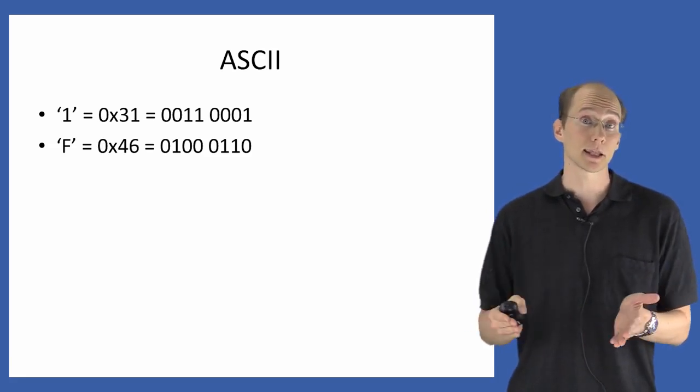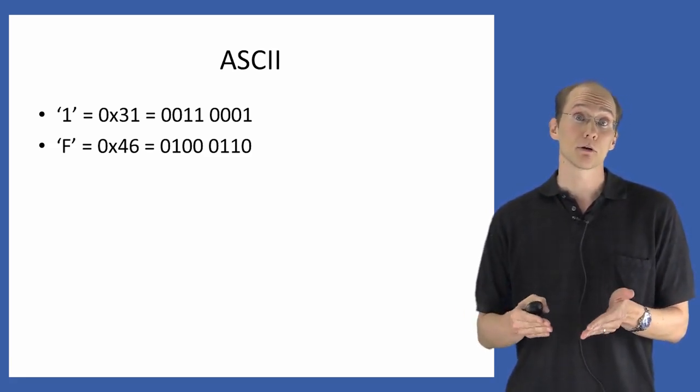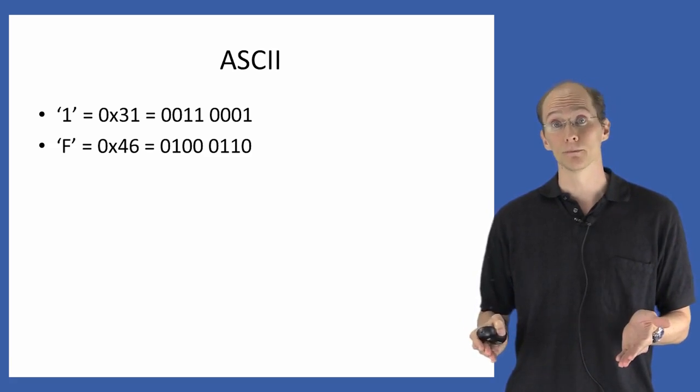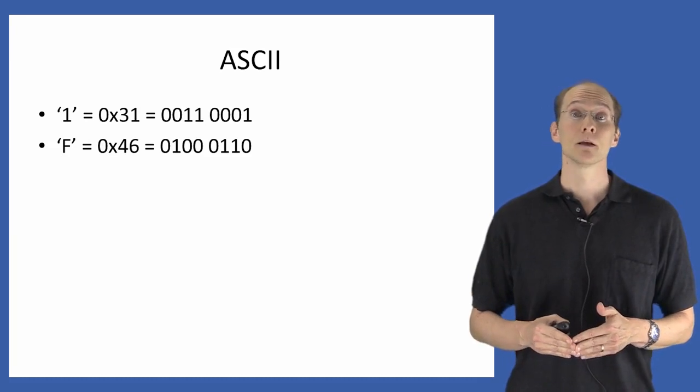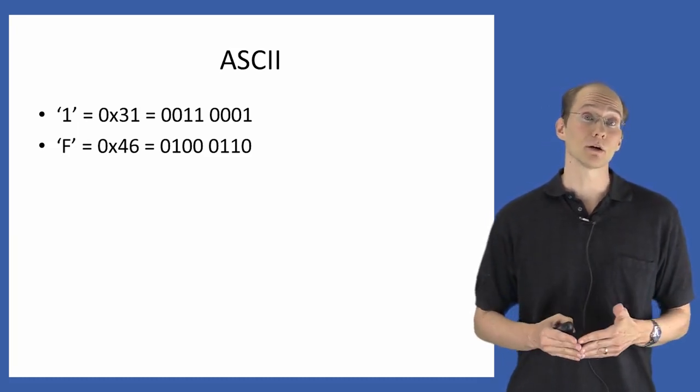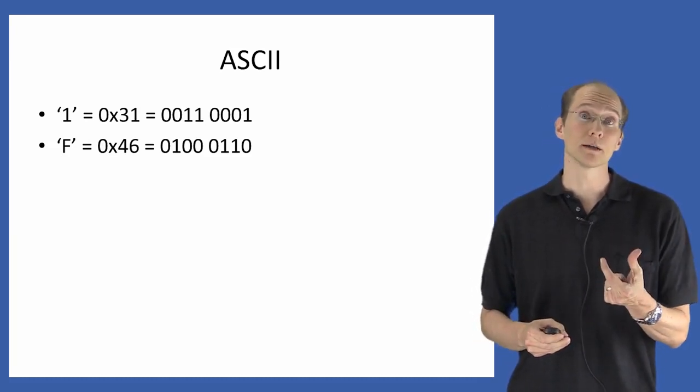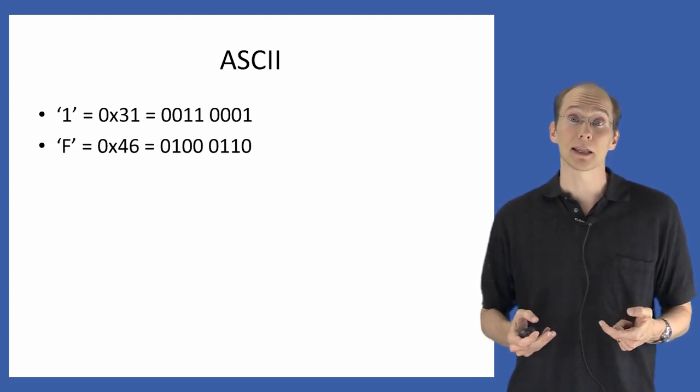that would actually be recorded in your computer as the hex value 31, or really at the lower level, it would be represented as a sequence of bits 00110001, the nibble corresponding to three and the nibble corresponding to one.